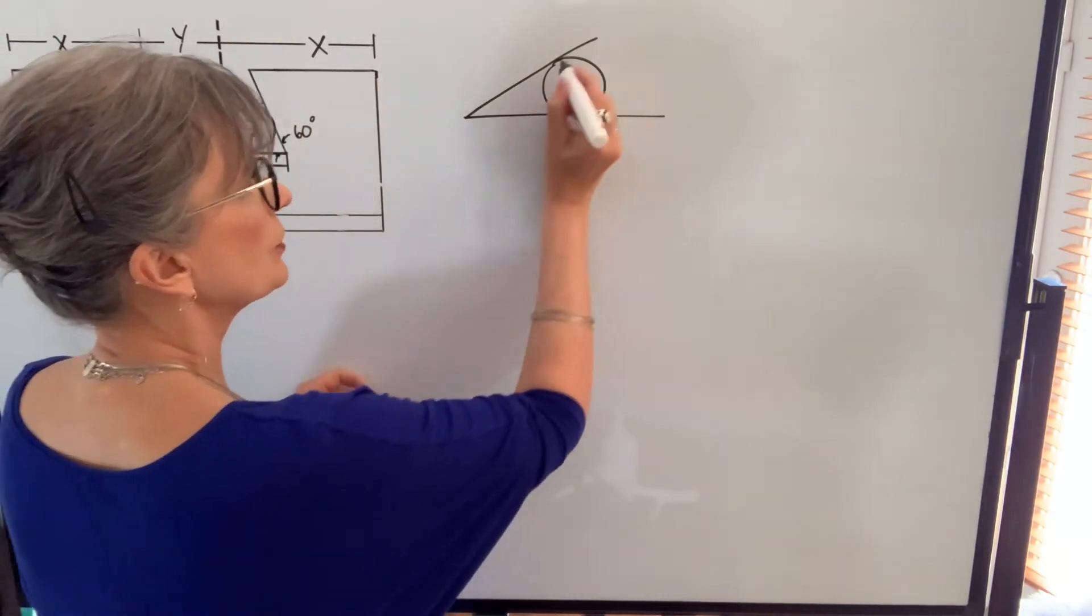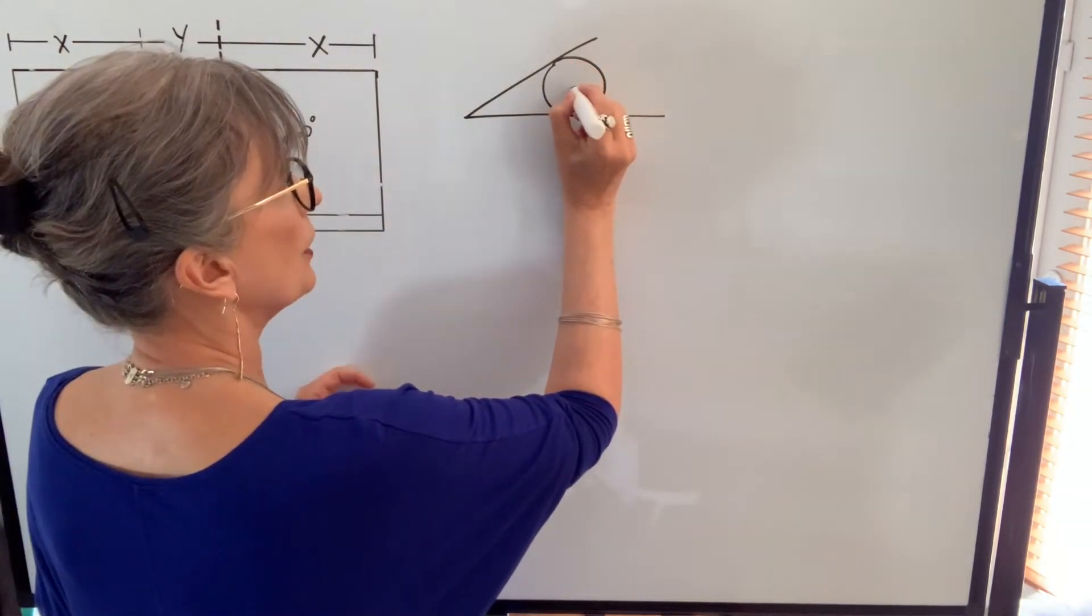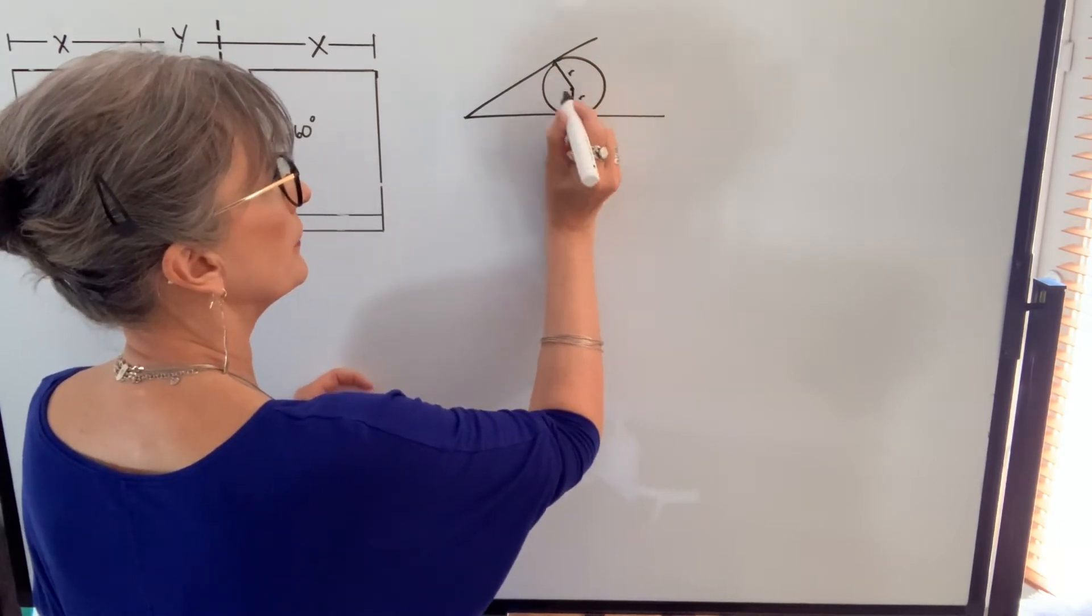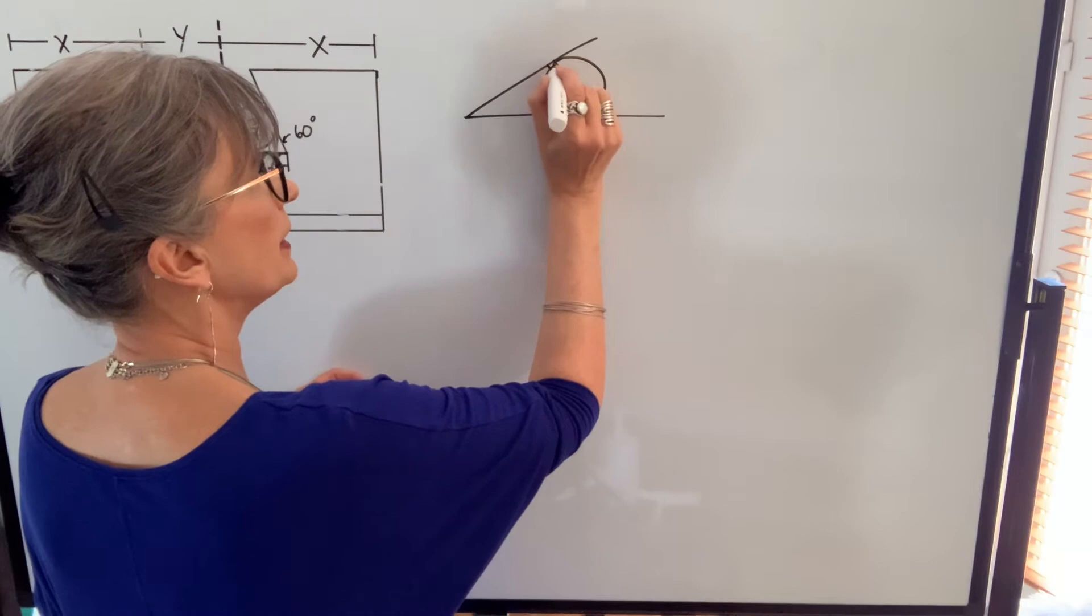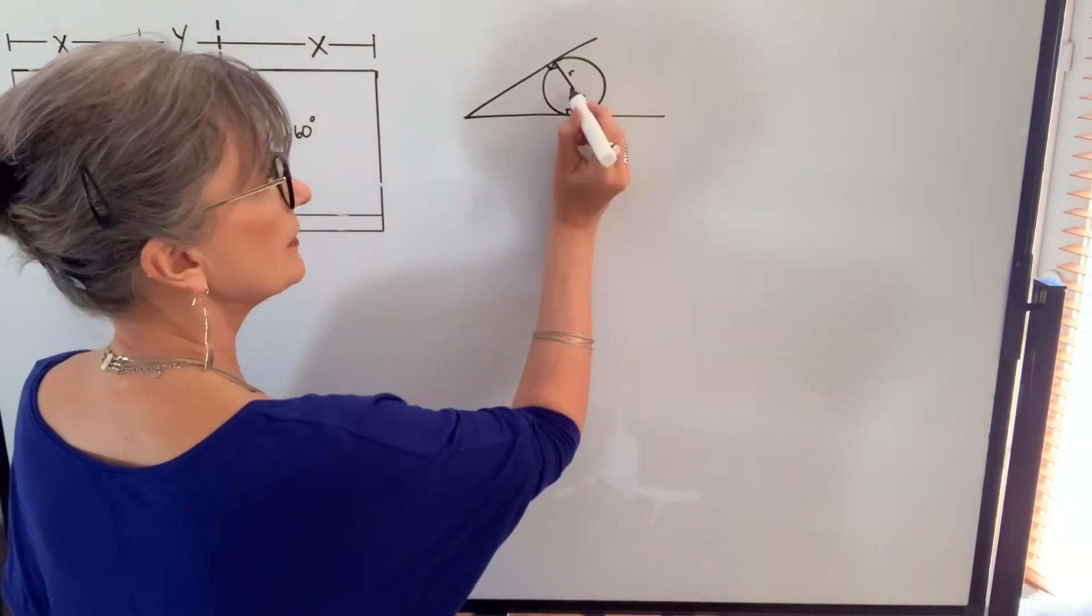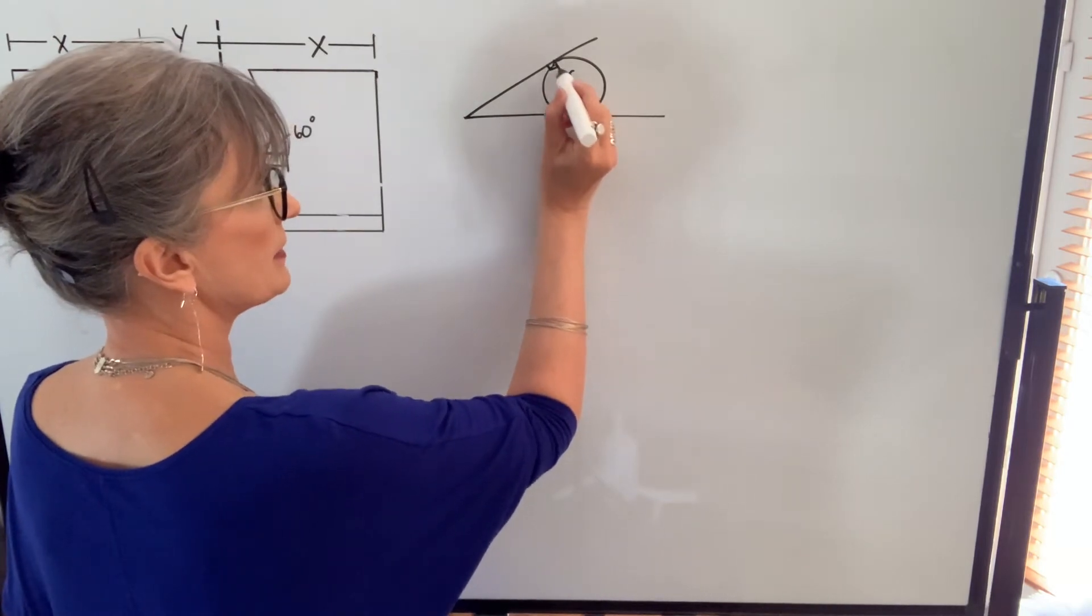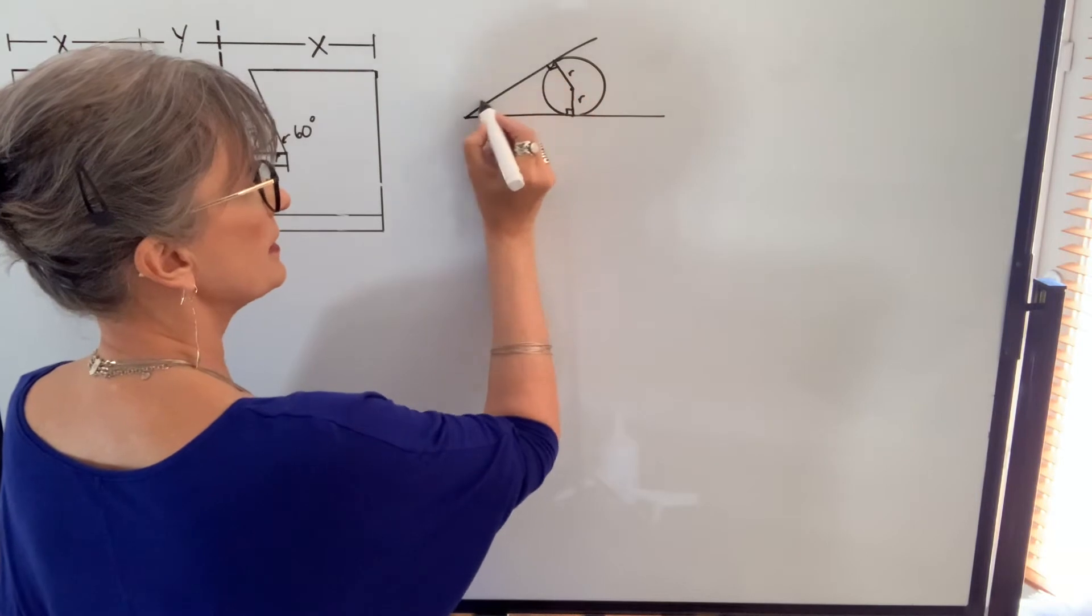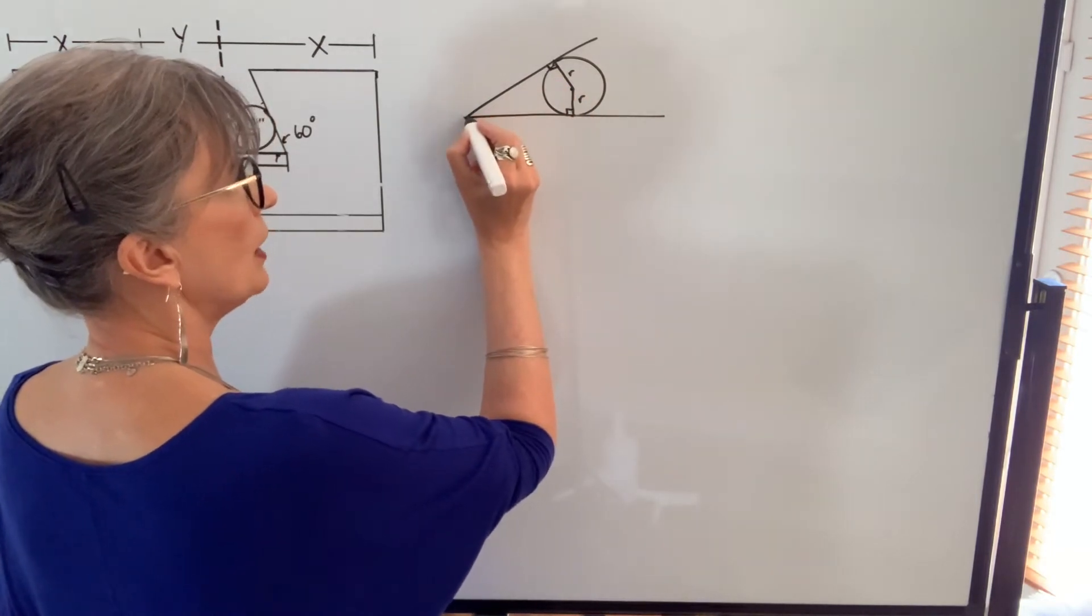If I have another tangent line, the same thing, if I were to draw the radius to that point, then that radius would form a right angle with that tangent line. Because this distance, the radius is the same as this distance here, we know that this distance will be the same as this distance.